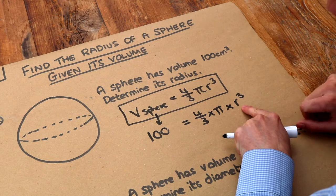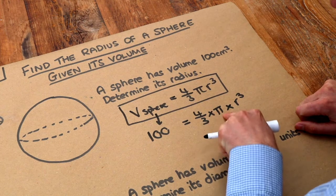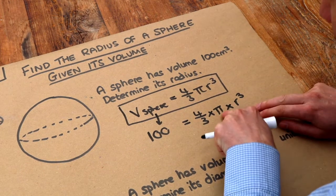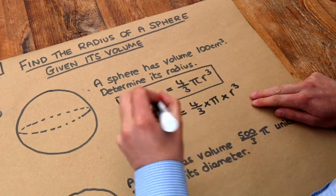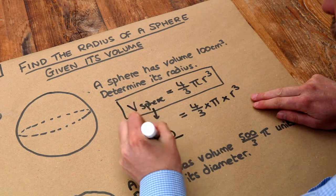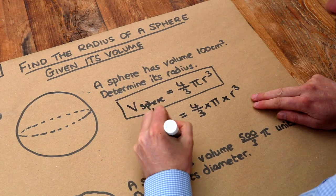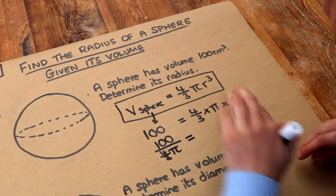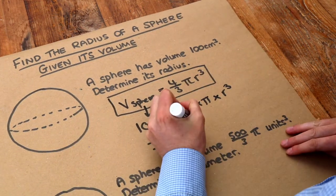Now the r cubed has been multiplied by four thirds and pi. So we could get rid of the times by pi and the times by four thirds by dividing both sides by four thirds pi. So let's do that. We have 100 over four thirds pi equals, and then we've got rid of that four thirds pi to leave just r cubed.